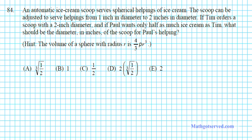Let's take a look at problem 84. It says an automatic ice cream scoop serves spherical helpings of ice cream. The scoop can be adjusted from one inch to two inches in diameter. If Tim orders a scoop with a two-inch diameter, and Paul wants only half as much ice cream as Tim, what should the diameter of the scoop be for Paul's helping? Since we're talking about amount of ice cream, we're dealing with volume.